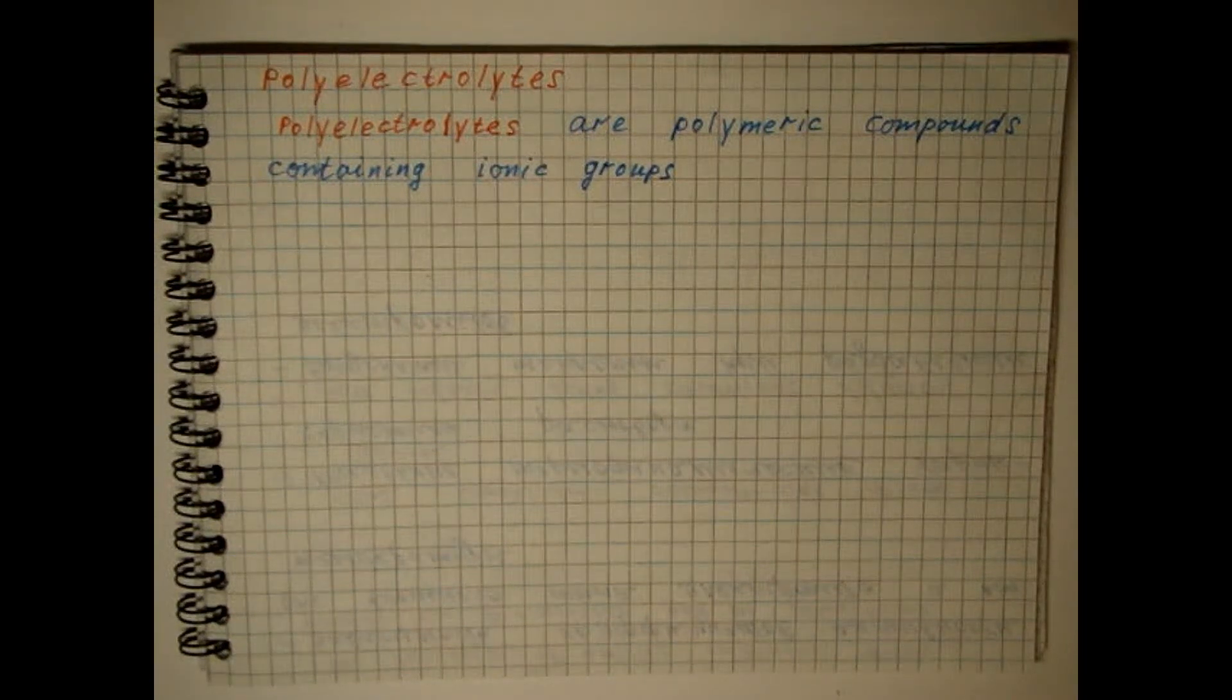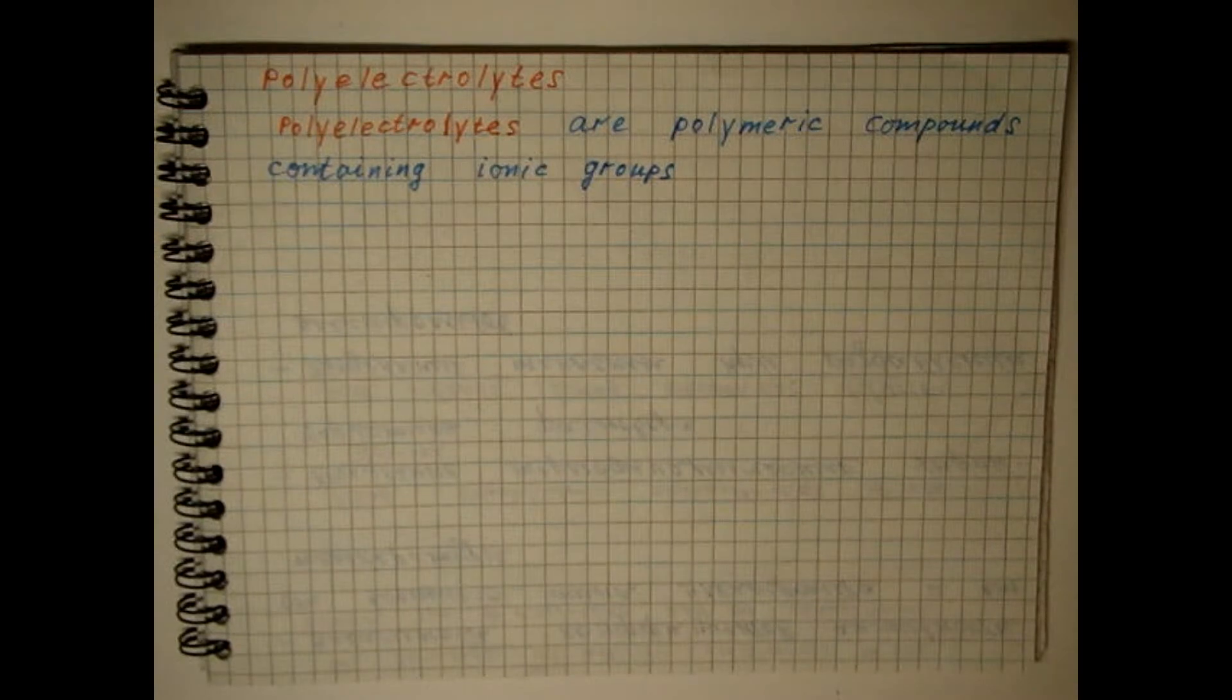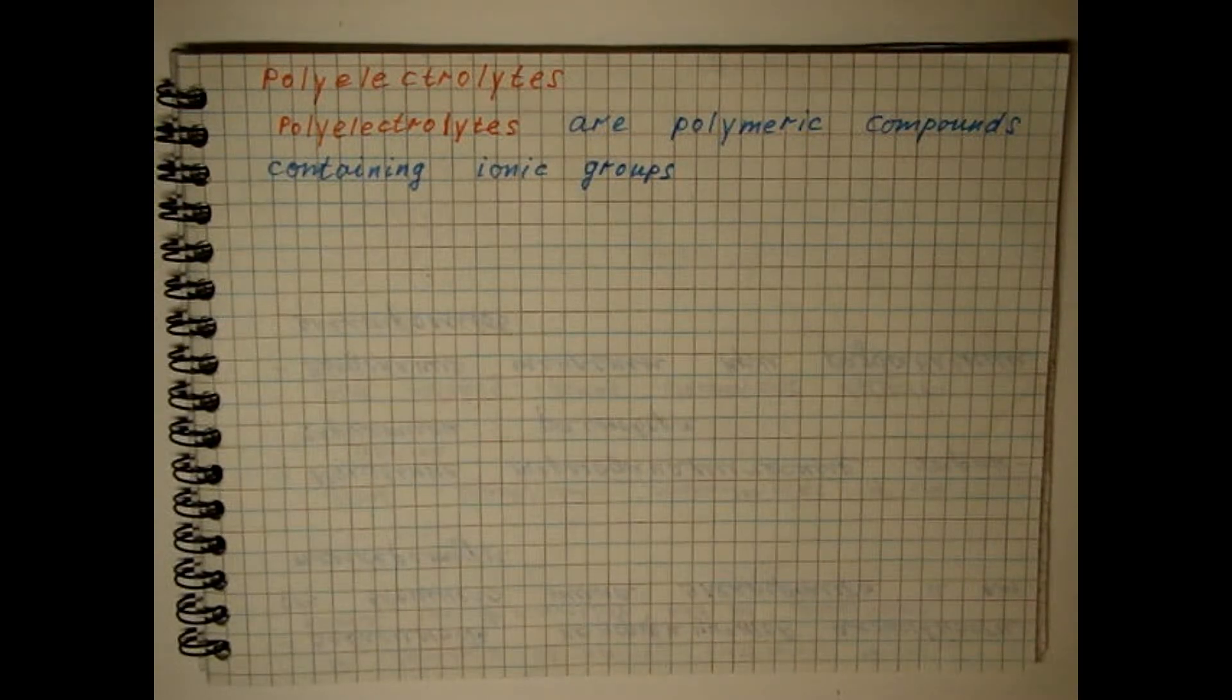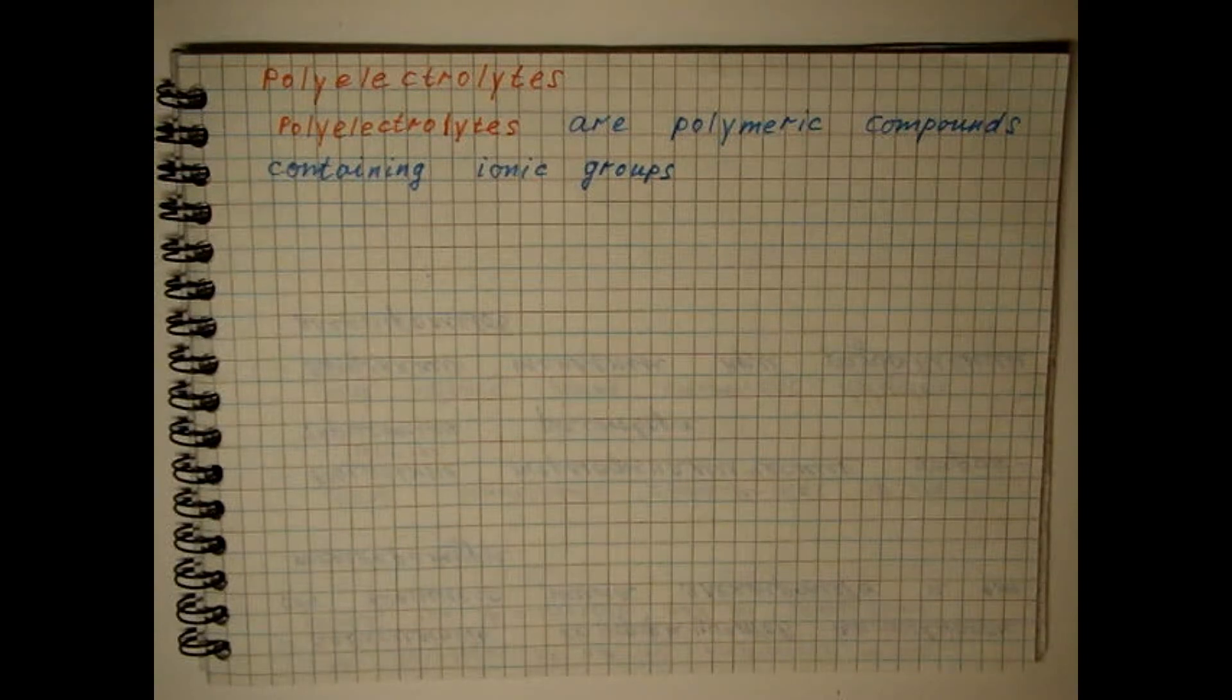For polyelectrolytes, the charge groups of the macro-ion are always located at small distances from each other, which primarily determines the behavior of polyelectrolyte solutions. In addition, the dimensions of the macro-ion of the polyelectrolyte are several orders of magnitude larger than the sizes of contra-ions.